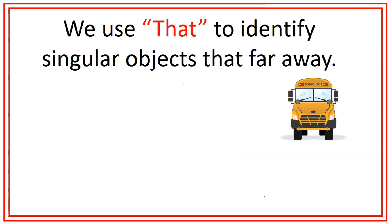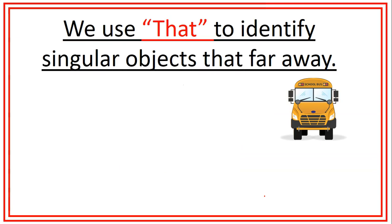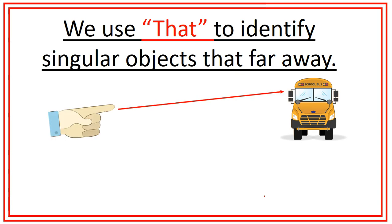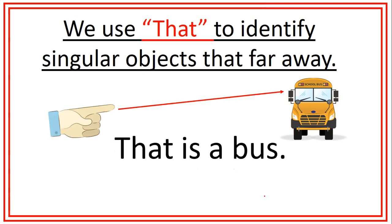Now, let's see how that works. We use that to identify singular objects that are far away. For example, that is a boss. Remember, we are talking about singular objects, so we use the verb to be is and the word a or an depending on the next word. If it starts with a consonant, we use a. If it starts with a vowel, we use an.